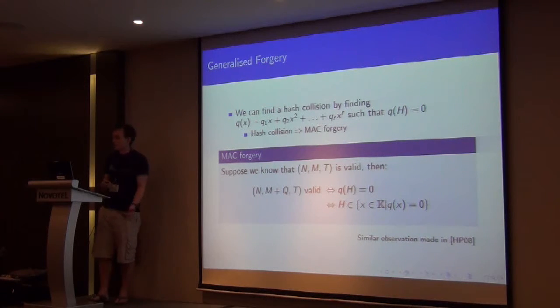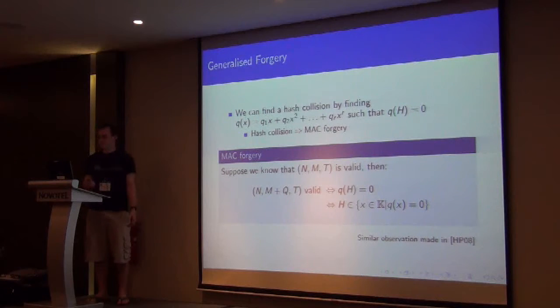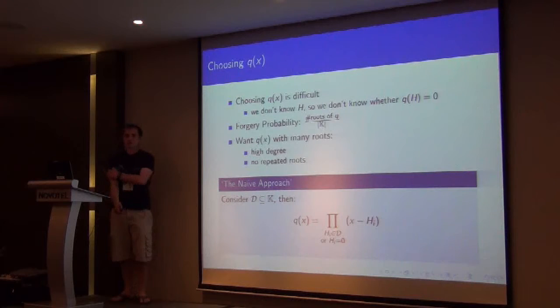And that's the description we're going to use for the weak keys in the next section. So how do we choose our forgery polynomial? Well, in general, it's difficult, because if we don't know what h is, then we don't know where q of h is 0.